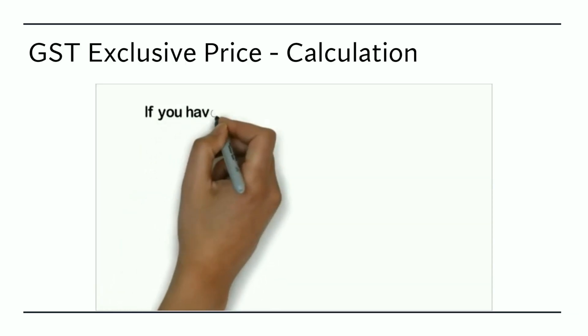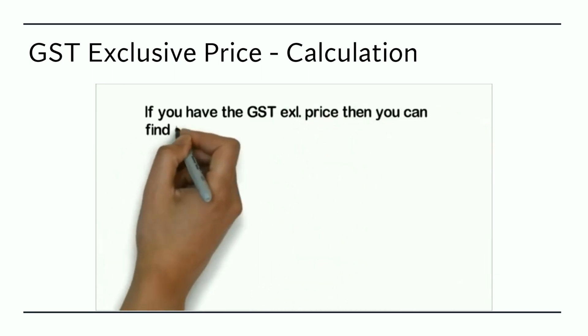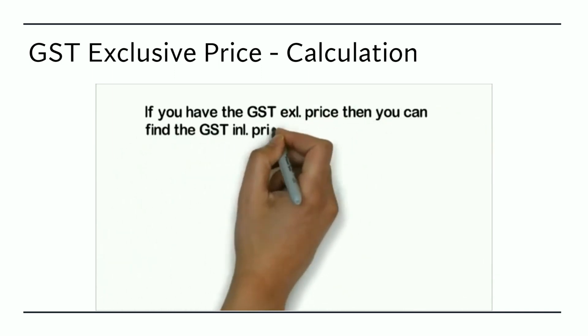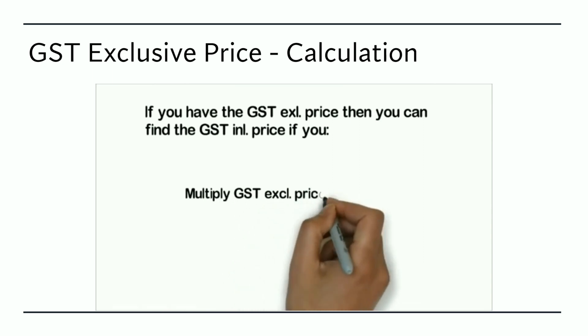If you have the GST exclusive price, meaning that there is no GST included in the figure, and you're wanting to find out how much GST is included, then you need to multiply the GST exclusive price by 1 plus GST.